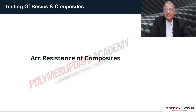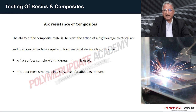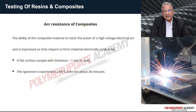The next electrical property to be tested for composites is arc resistance. Arc resistance is the ability of a composite material to resist the action of a high voltage electrical arc, and is expressed as the time required for the material to form an electrically conductive path. A flat surface sample with a thickness of 1 mm is used.